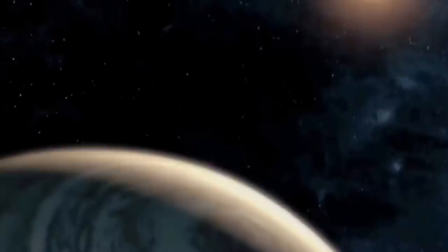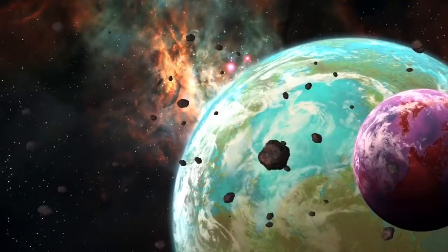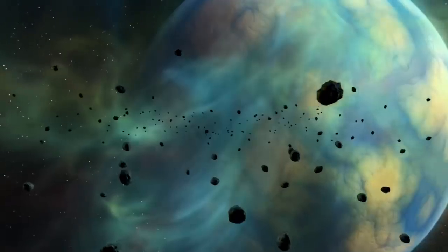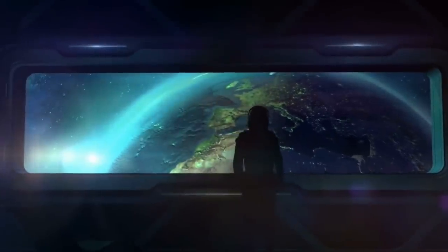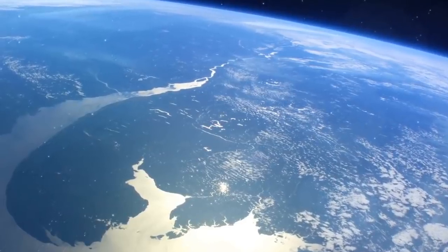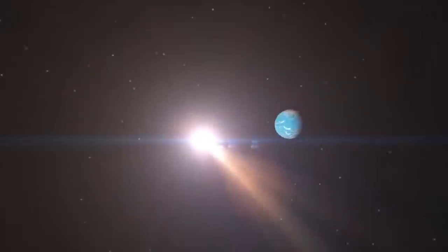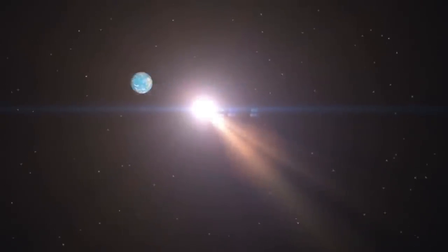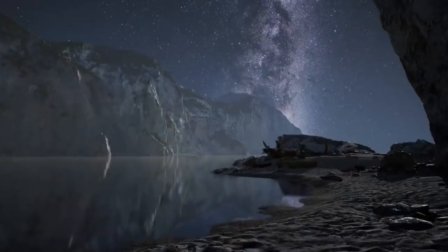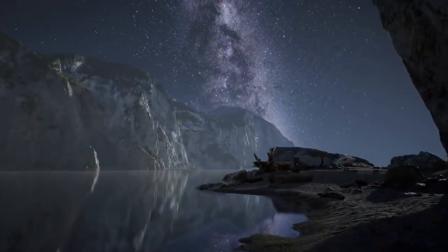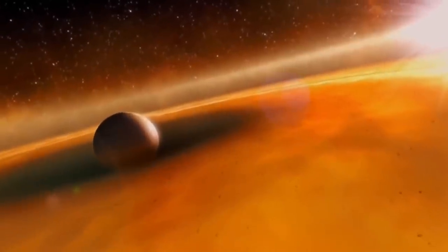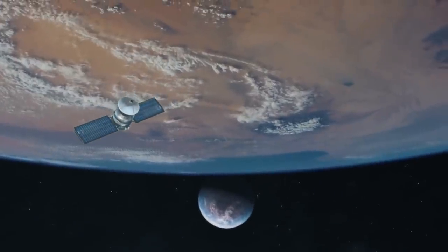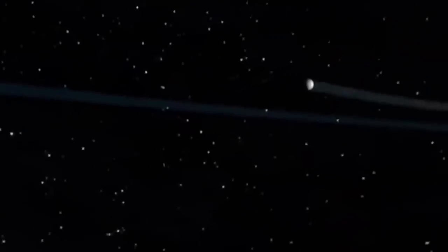According to planetary scientist Brett Gladman of the University of British Columbia and Catherine Volk of the University of Arizona, who authored this review, at least one extra planet appears in an unexpected location in several of the best computer-generated models of the solar system's early days. According to astrophysicist Scott Tremaine of the Institute for Advanced Study, all of the Mars-scale planets in the outer solar system are expelled into interstellar space in about half of the cases.